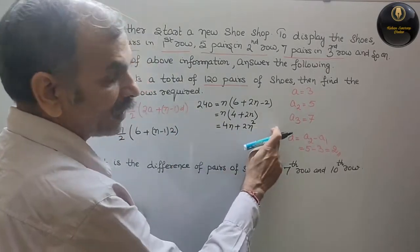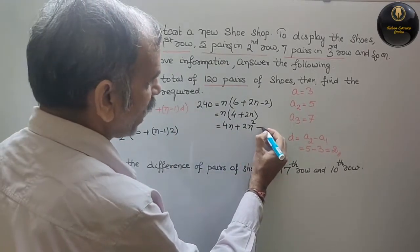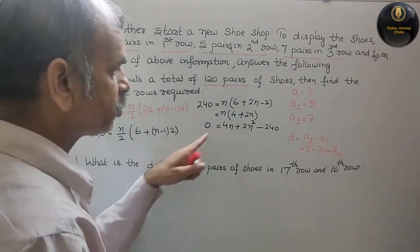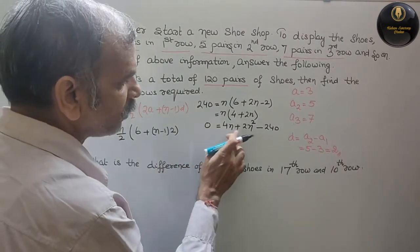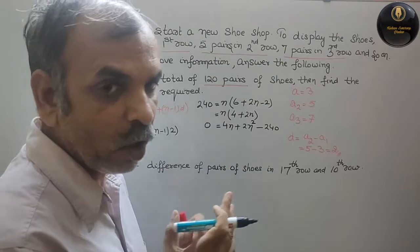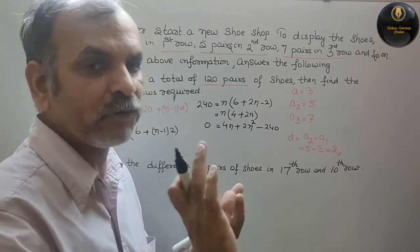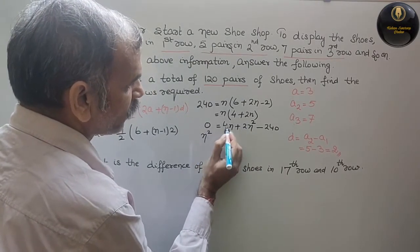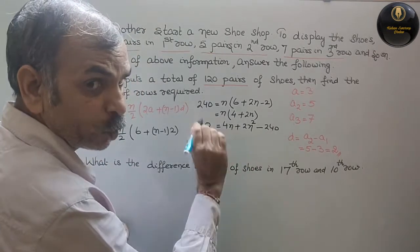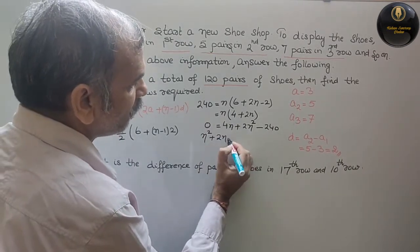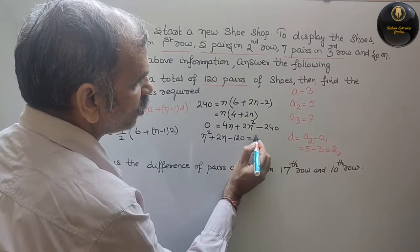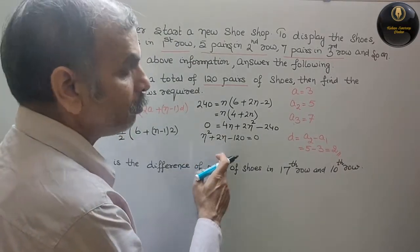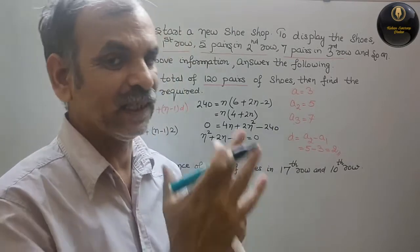Bringing 240 to the other side: 2n squared plus 4n minus 240 is equal to 0. Now writing in standard form and dividing everything by 2: n squared plus 2n minus 120 equals 0. Now we will do middle term splitting by finding factors of 120.